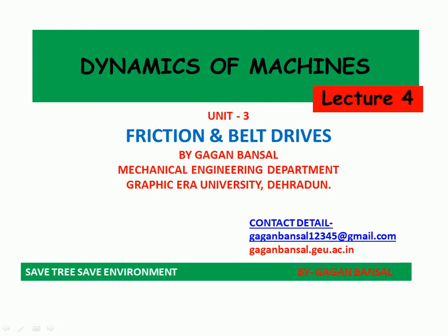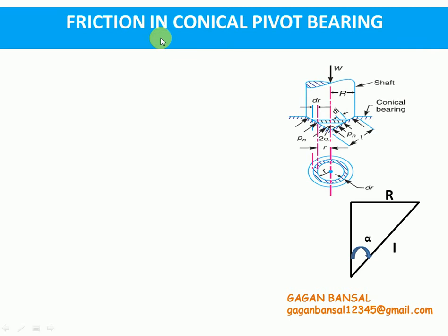Hello everyone, continuing with unit 3 that is friction. In this session we will be discussing about friction in conical pivot bearing. In the last session we studied about friction in flat pivot bearing and derived an expression for the frictional torque considering uniform pressure and considering uniform wear. Now let's consider friction in conical pivot bearing.